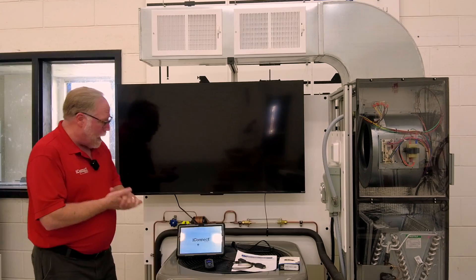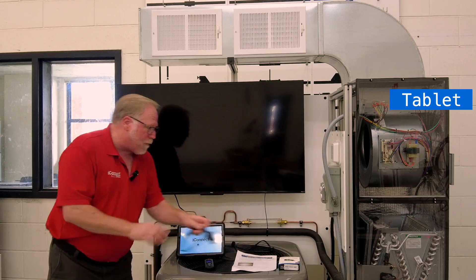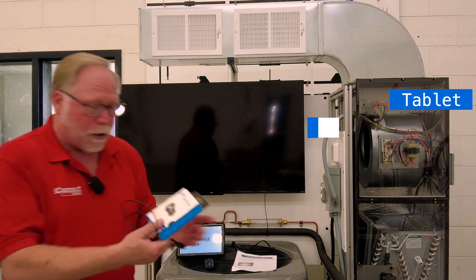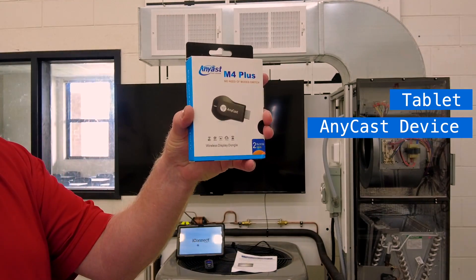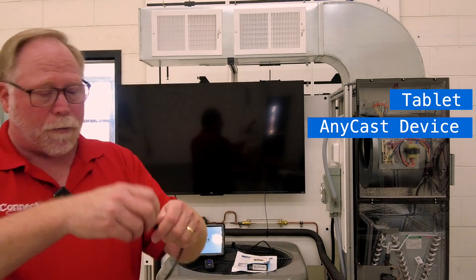Here's the box you're going to get. In the box, you're going to have a tablet, you're going to have an AnyCast device, which comes in this box right here, and it's going to come with some cables to power it up.